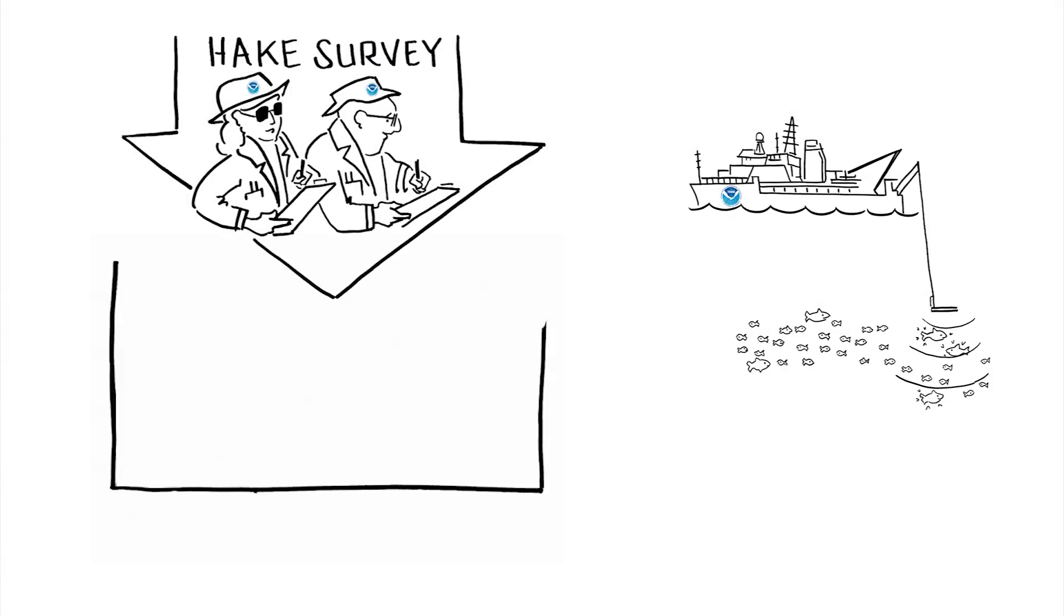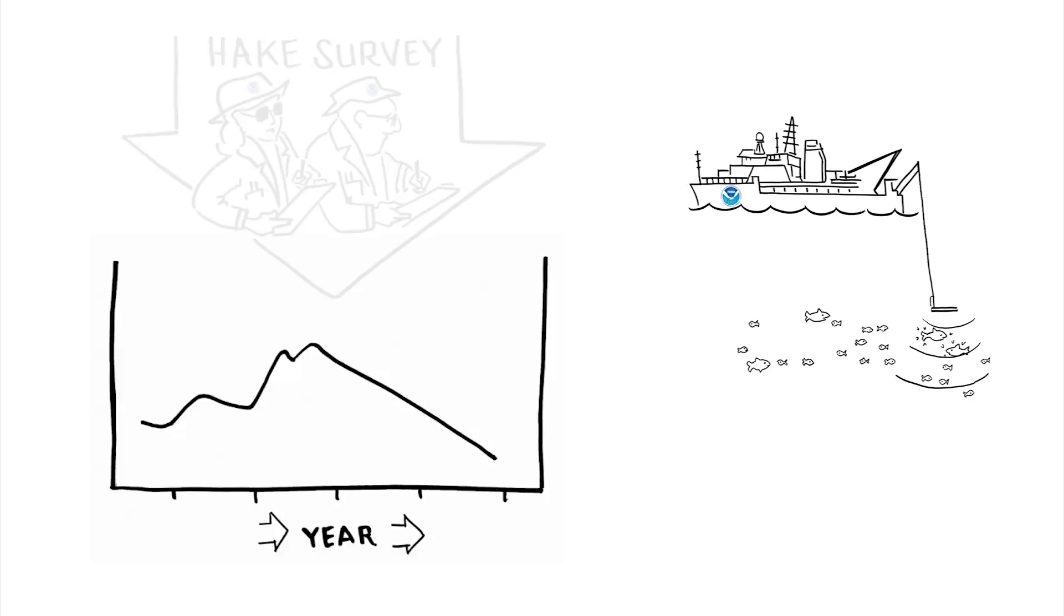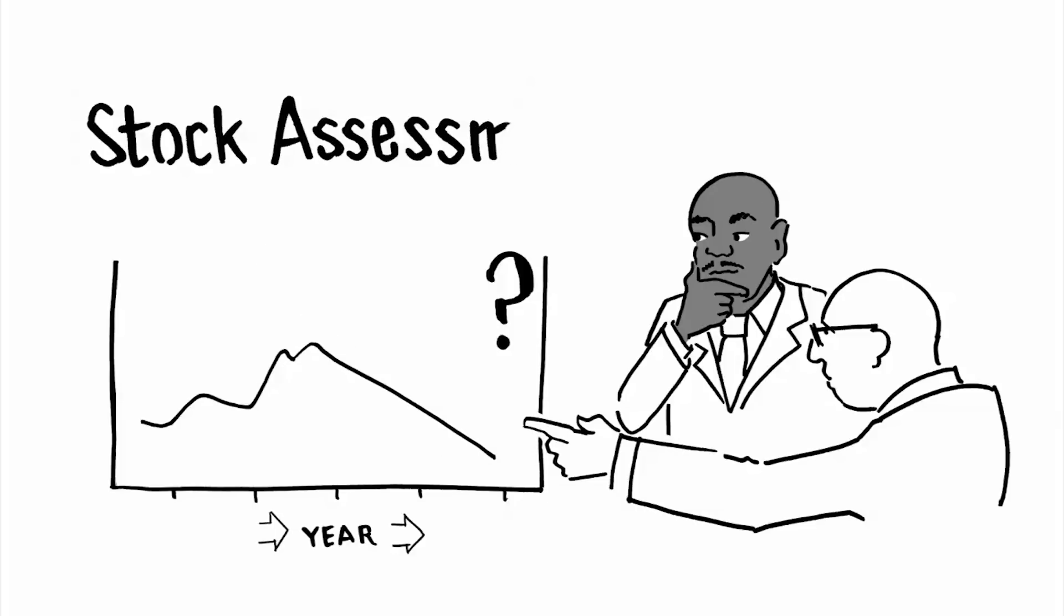In 2009, the Hake survey resulted in a high estimate. In 2011, the Hake survey had a low estimate. It was uncertain which estimate was most accurate, but the low 2011 survey suggested that managers should lower annual catch limits in 2012.